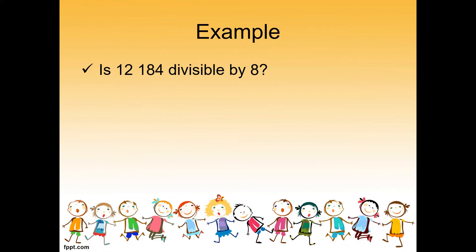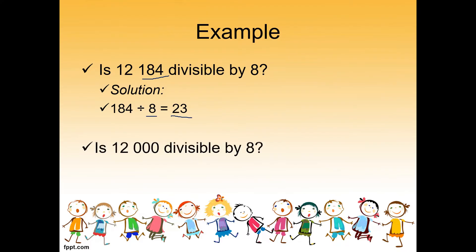Example: is 12,184 divisible by 8? So the last three digits are 184. 184 divided by 8 equals 23, so we can say the factors of 184 are 8 and 23 — meaning 12,184 is divisible by 8. Next, is 12,000 divisible by 8? The last three digits are 000, so automatically three zeros means it is divisible by 8, and 8 is a factor of 12,000.